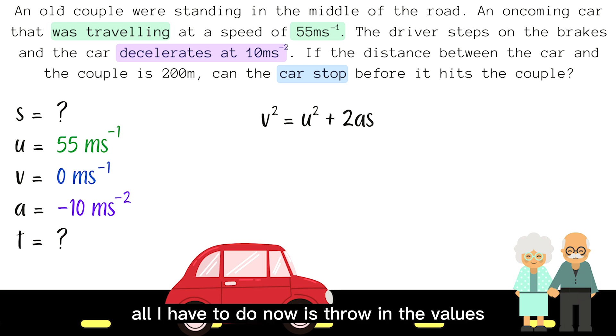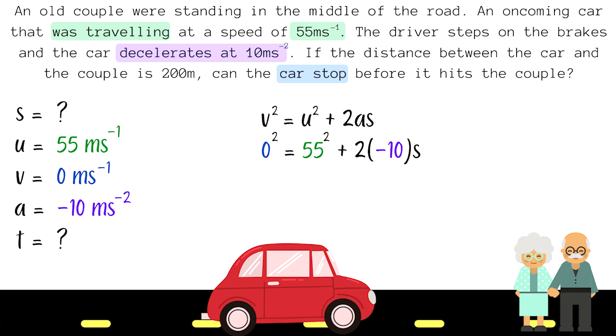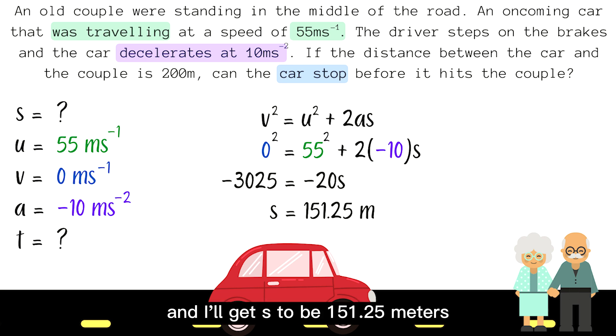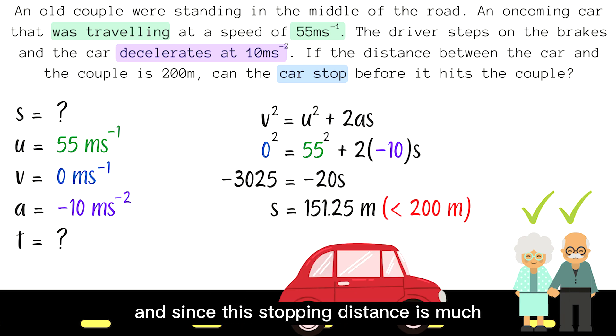All I have to do now is throw in the values, do some calculations, and I'll get S to be 151.25 meters. And since this stopping distance is much lesser than the 200 meter distance between the car and the couple, the car is able to stop before hitting the couple.